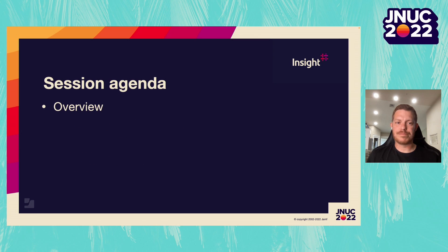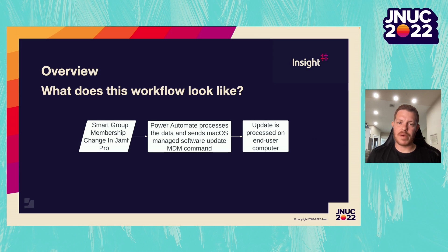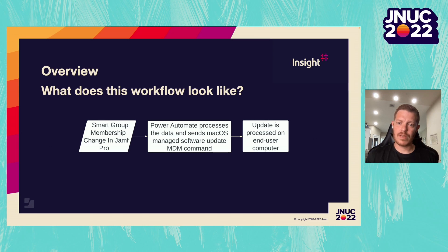Now let's go into the overview. What does this workflow look like? In Jamf Pro, a smart group membership change happens. That data is sent to Microsoft Power Automate via a webhook. Microsoft Power Automate will process that data and send a macOS managed software update MDM command to our end user devices. This is done through the Jamf Pro API. Then the update is processed on the end user computer, and your computer is updated.